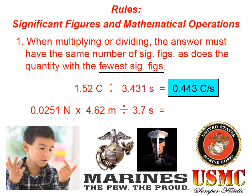This quantity, 0.443, has three significant figures. And of course we keep the units in there unless they cancel. The reason for the picture down here at the bottom of the screen is that I call this the 'few, the proud, the marines' rule. Let's try the next example.